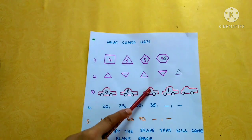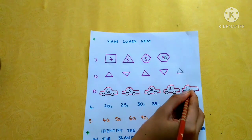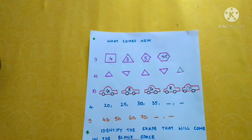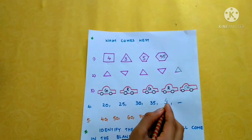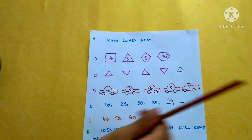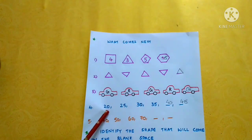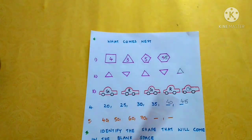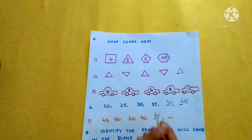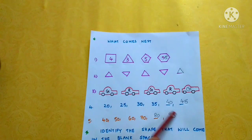The color pattern is: G, R, G, R, G. For skip counting: 20, 25, 30, 35, 40, 45 — we have done skip counting by 5. Then: 40, 50, 60, 70, 80, 90 — we have done skip counting by 10.